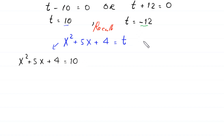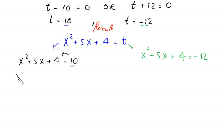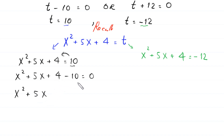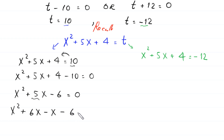When t = −12, the equation becomes x²+5x+4 = −12. From the first case (t=10), moving 10 to the left-hand side gives x²+5x+4−10 = 0, which simplifies to x²+5x−6 = 0. This is factorable.